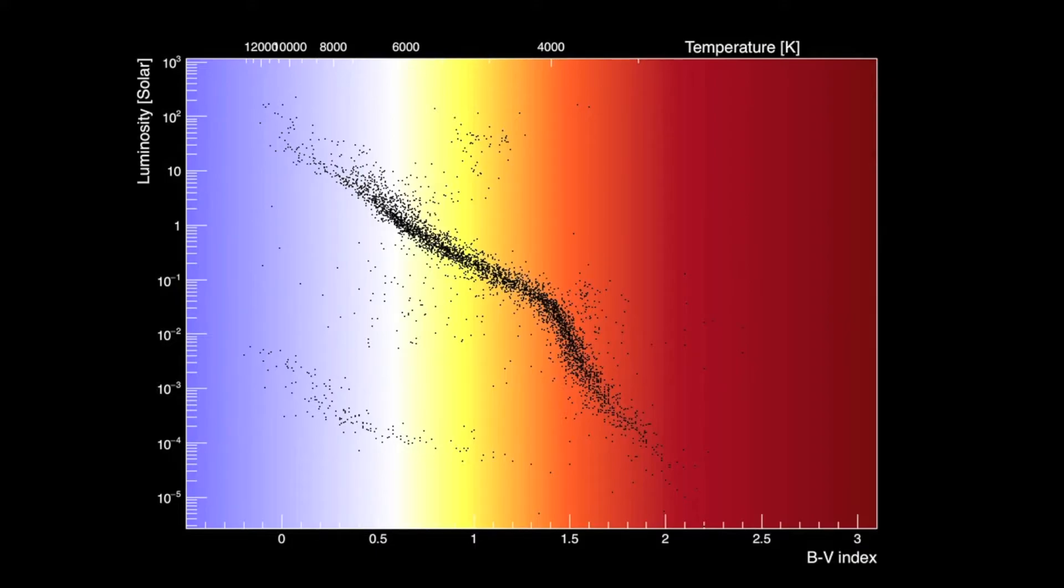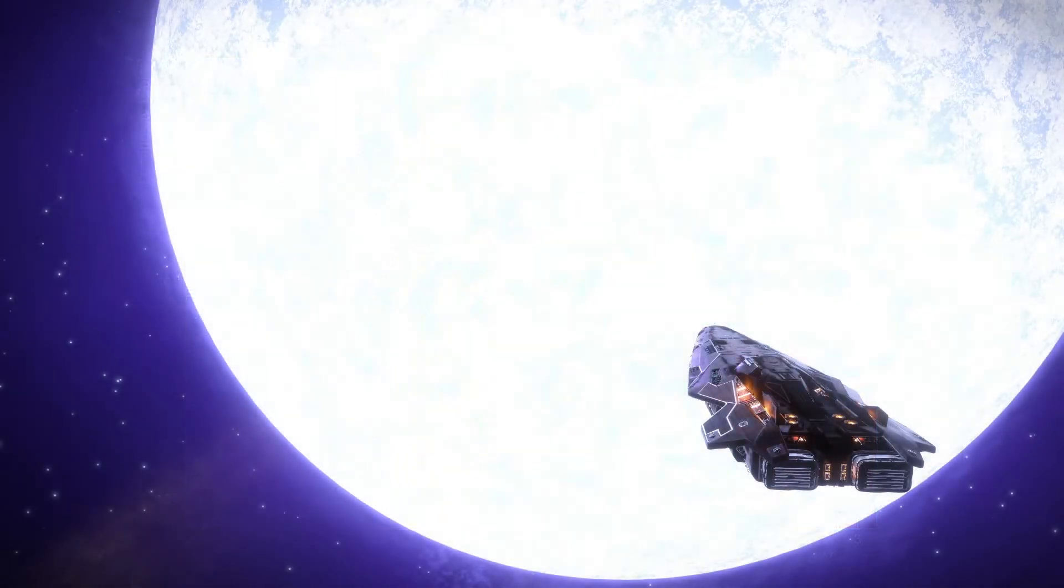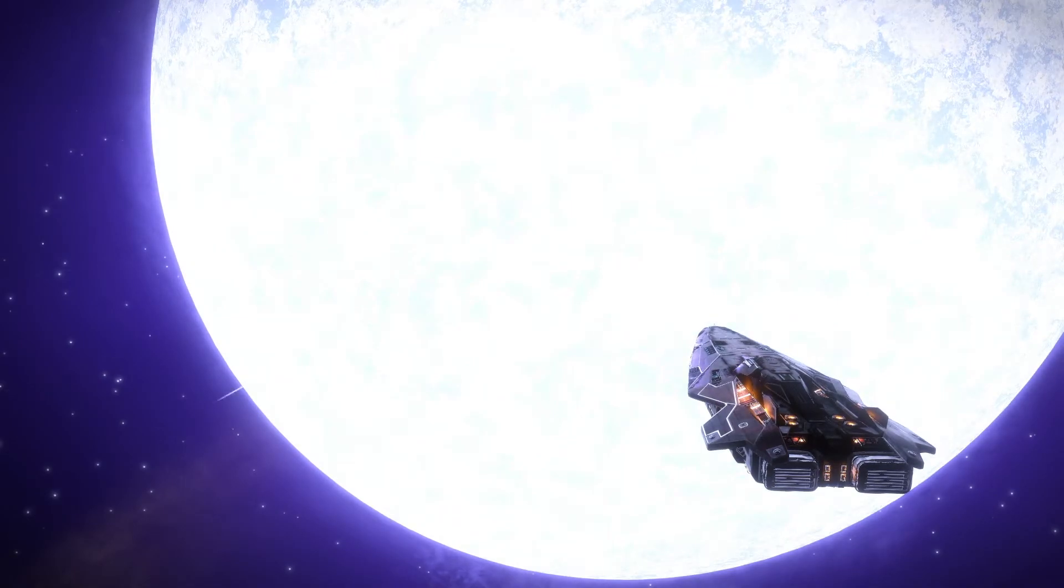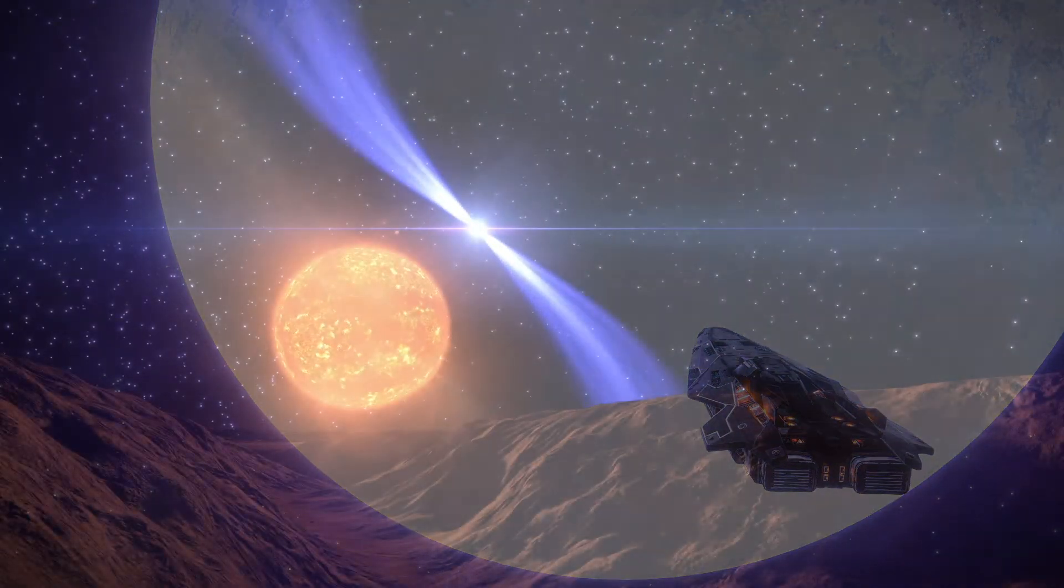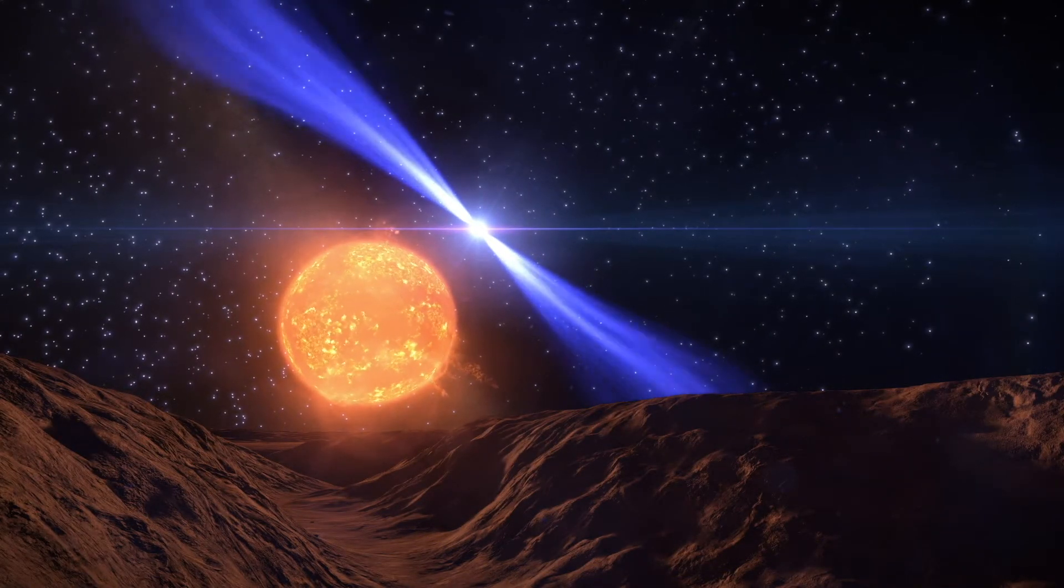Two of the populations will catch your eyes. They are above and below the main sequence, and I said that for a star to be significantly brighter or dimmer to have the same color temperature, must therefore be larger or smaller in radius. You can guess then that the population above the main sequence is the so-called giant branch, and the stars below are dwarfs, white dwarfs to be specific.